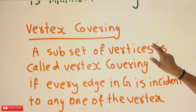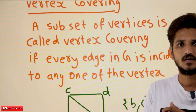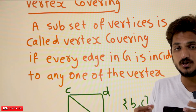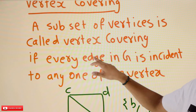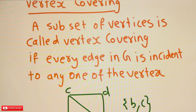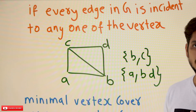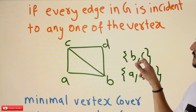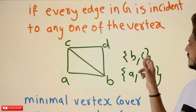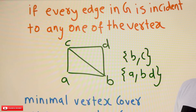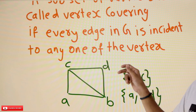Now moving to vertex covering. Here instead of selecting edges, we select vertices. A subset of vertices is called vertex covering if every edge in G is incident to at least one of the selected vertices. For example, with graph a-b-c-d, if you select vertices {b, c}: take edge c-d — c is covering; take edge a-b — b is covering; take edge a-c — c is there; take edge b-d — b is there. Every edge is incident to one of the selected vertices.